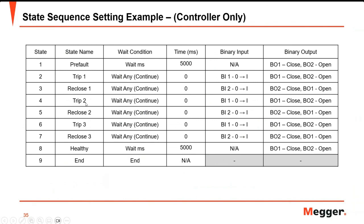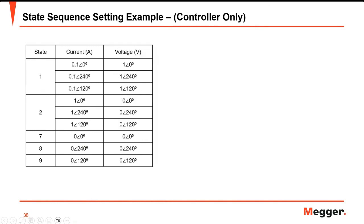The states from four onwards cover up to the third shot — this is set for three shots. If you want to check the lockout or until the relay sends a lockout command, you can add more states. These are some examples of the test values; these values may change depending on the protection functions you are testing. If you are testing other protection functions that need voltage, you can put the voltage values here — it depends on the functions you want to test.